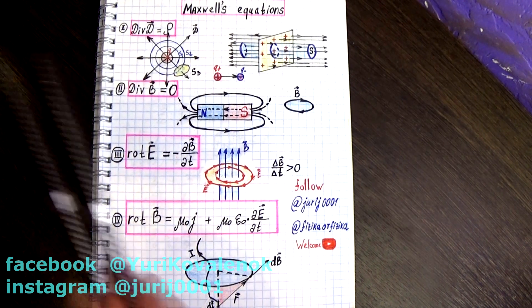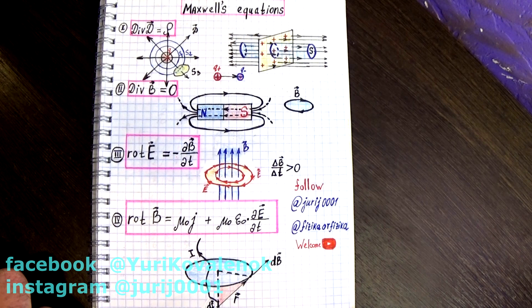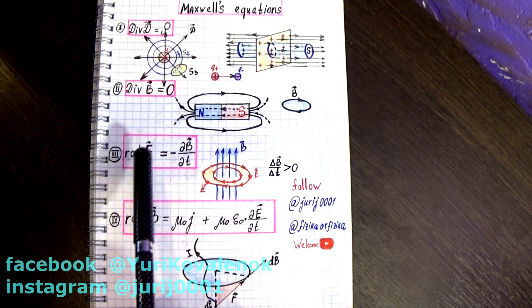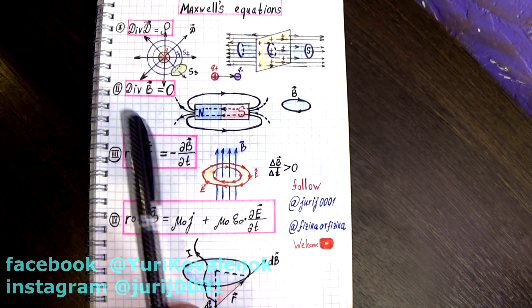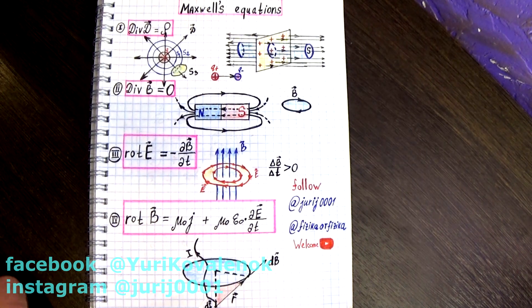The second Maxwell equation says that the magnetic field lines are always closed. There are no magnetic charges. Maxwell's third equation is Faraday's law or the law of electromagnetic induction, and the minus sign in this point is the Lenz rule.